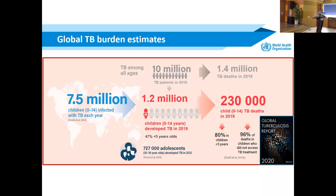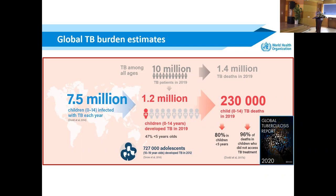We often think that children don't get TB, but globally there's a very large disease burden. More than 1 million children are estimated to get tuberculosis every year, with nearly a quarter of a million dying — most of those dying are children under five, and they die without diagnosis or treatment. Lâu nay mình cứ nghĩ trẻ em không mắc lao, nhưng thực ra hơn 1 triệu trẻ mắc lao mỗi năm, trong đó 230 nghìn trẻ tử vong, và 80% là trẻ dưới 5 tuổi — hầu hết tử vong vì không được tiếp cận điều trị.